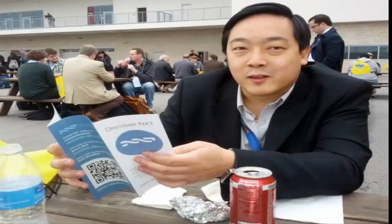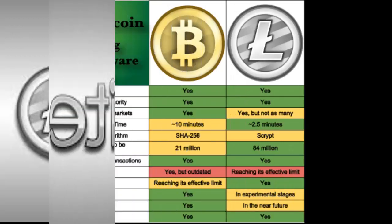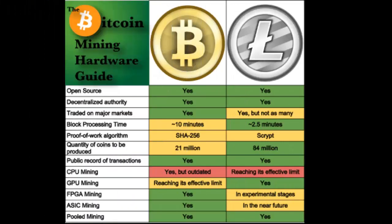In 2011, former Google employee Charlie Lee released Litecoin. Litecoin was a fork of the Bitcoin blockchain — the only differences were that the time between blocks was reduced to 2.5 minutes from 10 minutes, and the maximum number of coins would be 84 million as opposed to Bitcoin's 21 million. This was the birth of the altcoins, and the crypto market has never been the same.